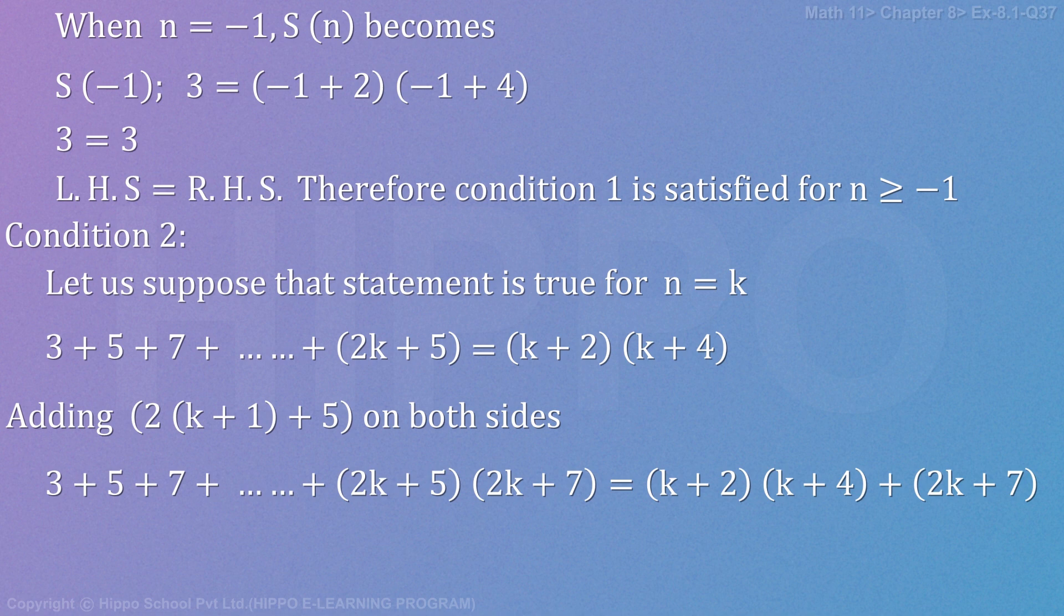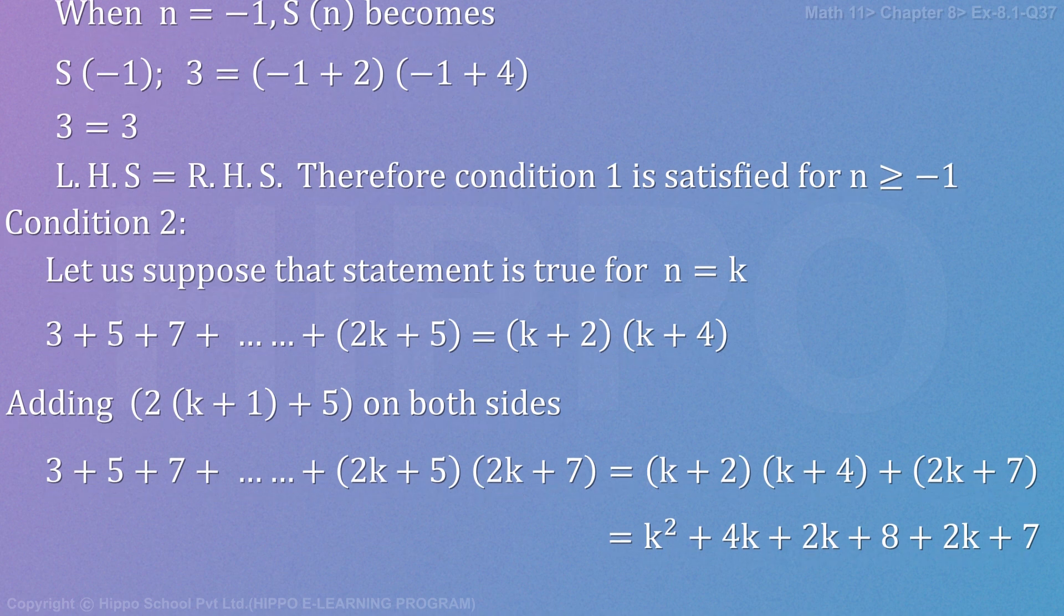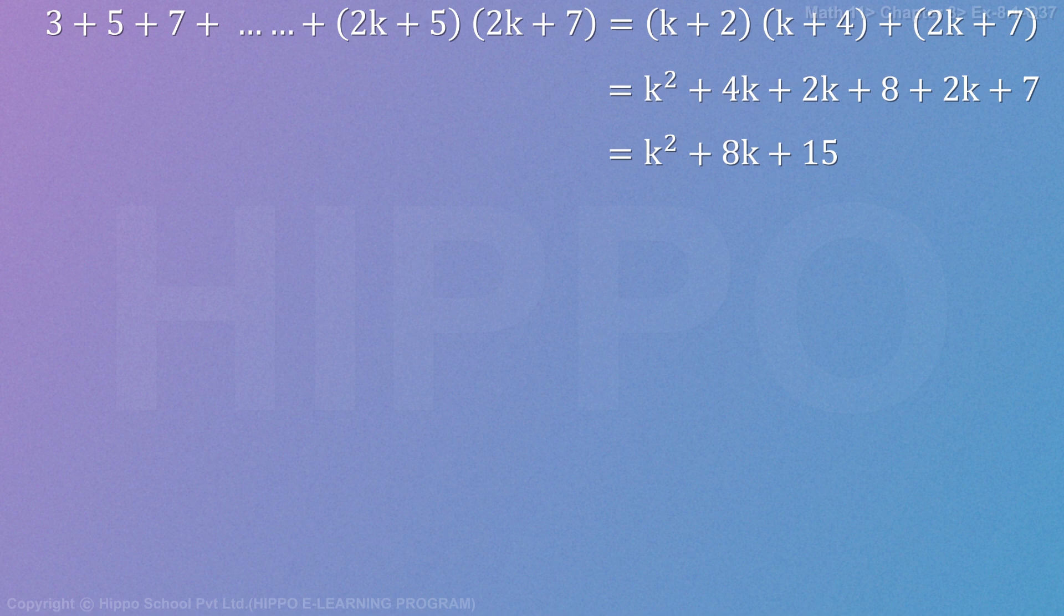That is equal to k square plus 4k plus 2k plus 8 plus 2k plus 7, which is equal to k square plus 8k plus 15. Factoring, we get k square plus 5k plus 3k plus 15.